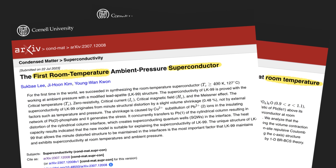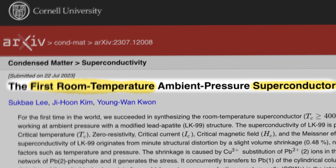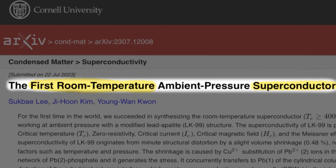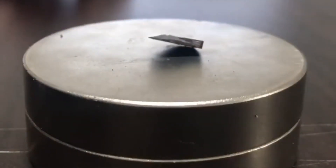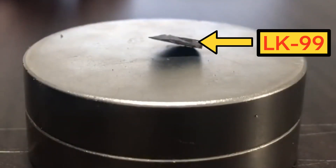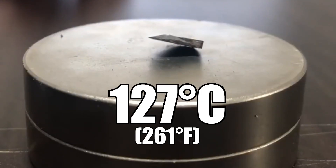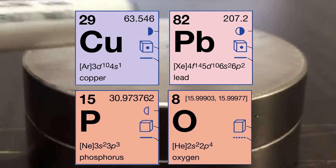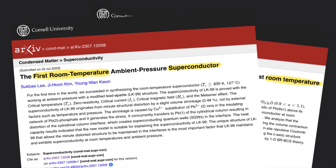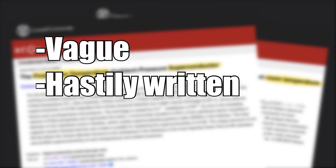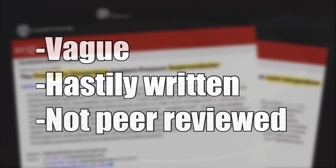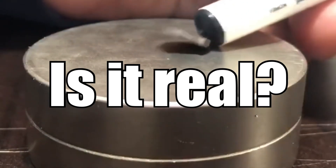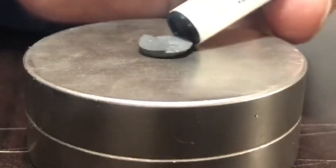On the 22nd of July 2023, two scientific papers were released claiming they found the world's first room temperature superconductor. In the papers they said to have a superconductor called LK99 that works up to 127 degrees Celsius at normal pressure, and that you could make it with pretty basic materials. This would be very exciting news if the claims were real, but the two papers were very vague, hastily written, and not peer reviewed. So we don't know if LK99 is real and how it achieves its superconductor powers at room temperature.